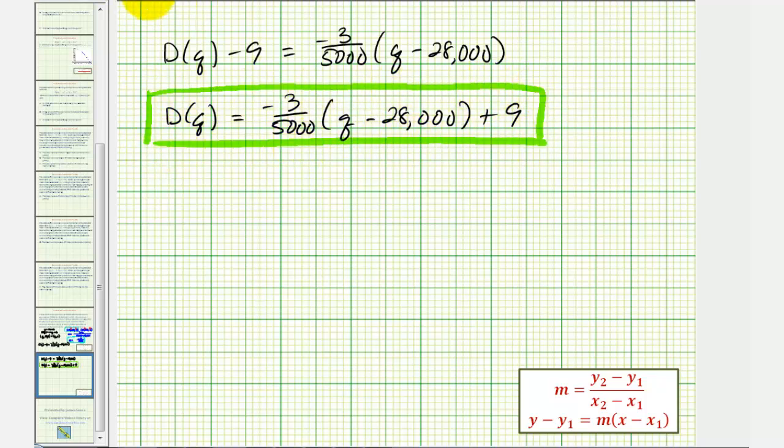If we did continue, the next step would be to distribute the fraction here. So we'd have D(q) equals negative 3 divided by 5,000 times q. Next, we have this negative fraction times negative 28,000, which we'll use the calculator for.